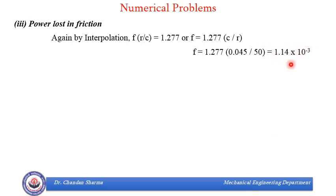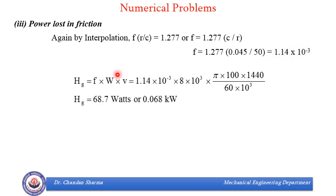Then, we found what is Hg or heat generated which is FWV. We keep the value of F, this is W, 8 kilonewton and pi dN upon 60. Mind you, you need to put value of V in meters per second. So, Hg comes out to be 68.7 watts or 0.068 kilowatt.